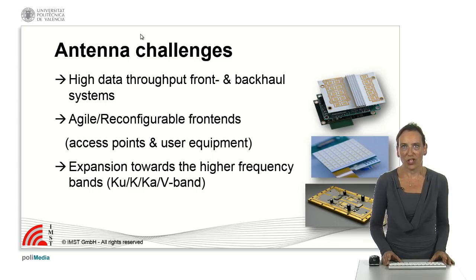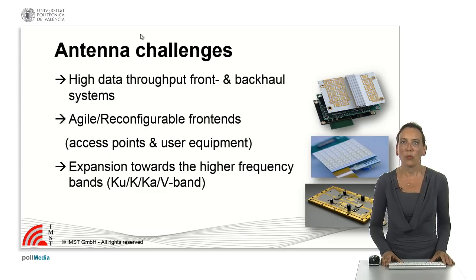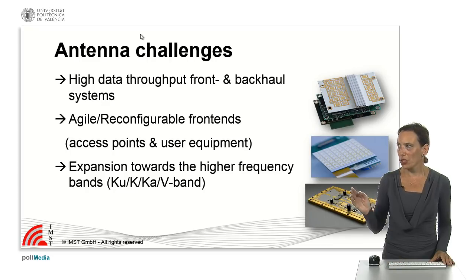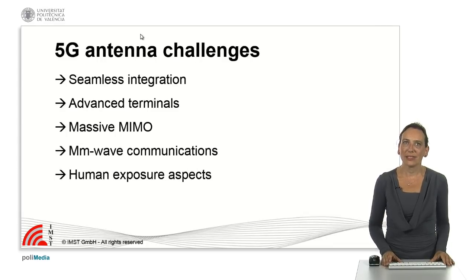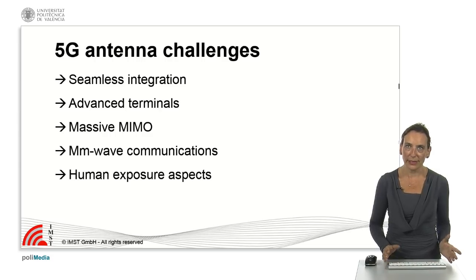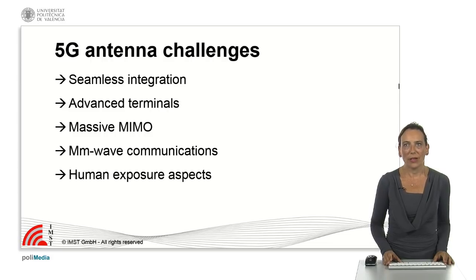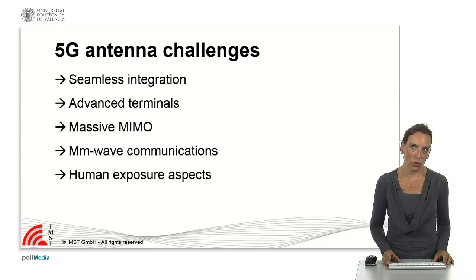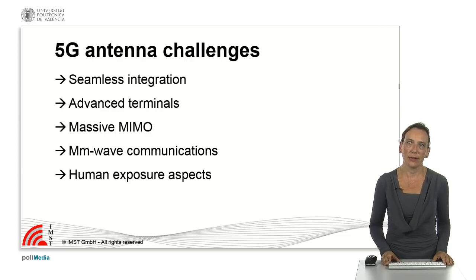What we have to face now with the deployment of 5G is that we are having a higher data throughput both for the front and backhaul systems of the networks. We will need agile and reconfigurable frontends both on the access points and in the user equipment. And also we are facing the expansion towards the higher frequency bands, for example Ku, K, Ka and V band. We will be facing different challenges for the antennas: first, seamless integration of the antennas in the devices and also moving between the different frequency bands. We will need to develop advanced terminals, we will have to implement massive MIMO, and also deal with some aspects of millimeter wave technologies for communications. Last but not least, we will have to develop new setups for measurement and also new procedures for simulating the human exposure effects in millimeter wave communications.